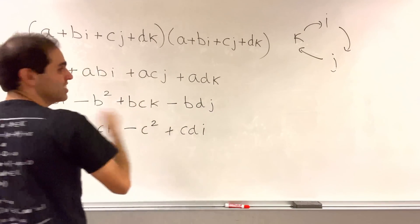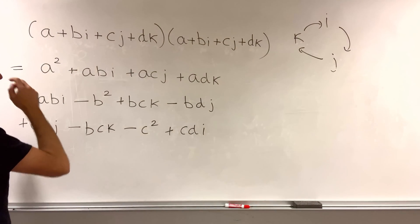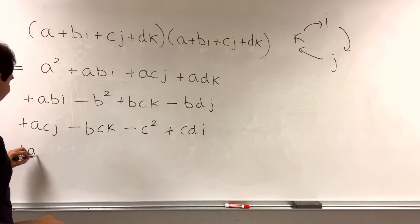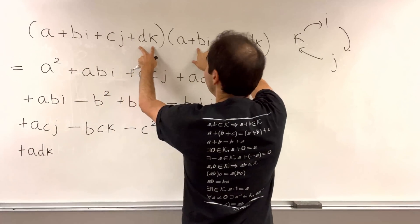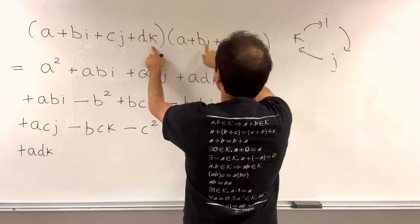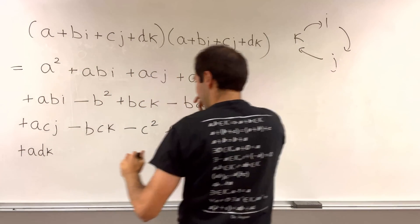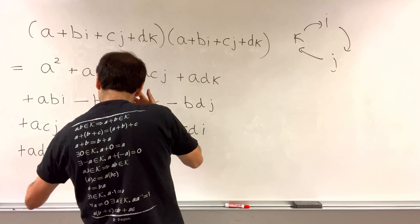Last but not least, the Donkey Kong line, so adk. Now, dk times bi, so bdk times i, which is j, so plus bd.